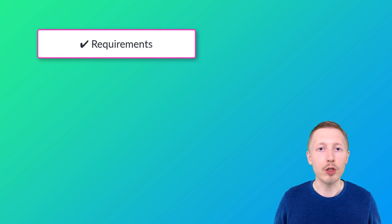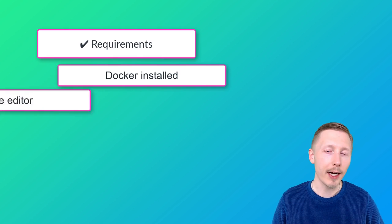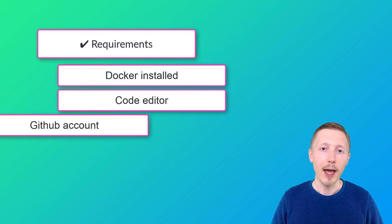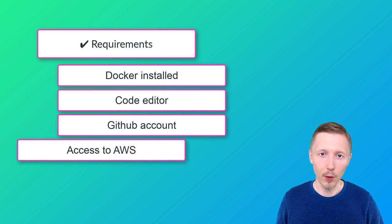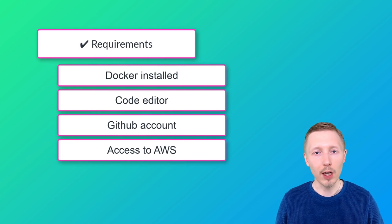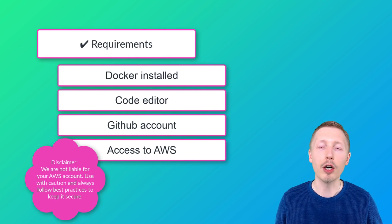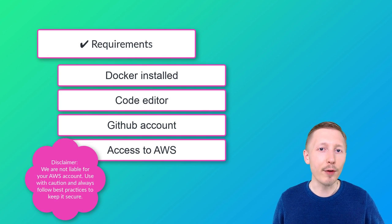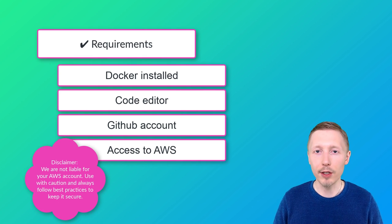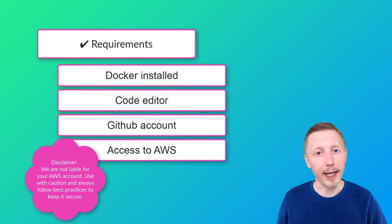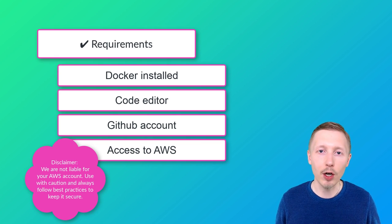In order to get started, you're going to need Docker installed, a code editor, a GitHub account, and access to AWS. We're going to be using a server available in the AWS free tier, but it's important that you take responsibility for any payments accrued on the account. Technically, if you follow the tutorial exactly, you shouldn't be charged for any resources. However, there's no guarantee, so always check which resources you're creating in AWS and see if there is any cost outside the free tier.